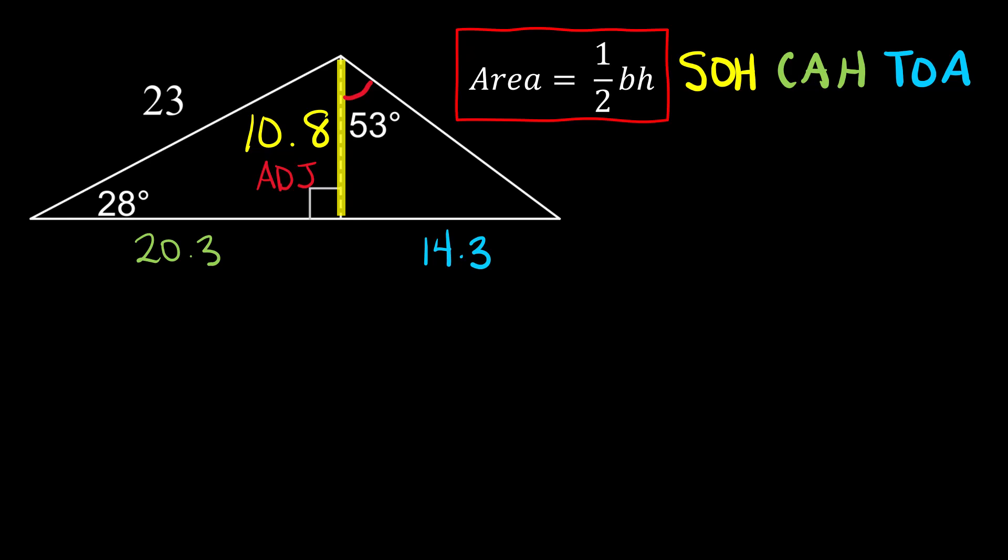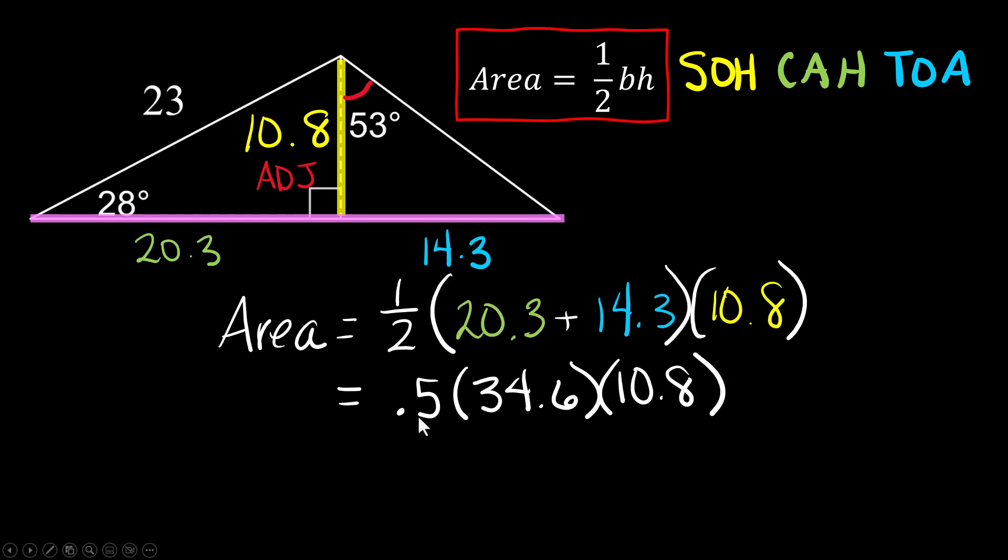Now we have all the pieces and parts. We just need to find the area now. We can figure out what the whole base is if we add these two together. We already knew the height. So that'll be the base. So let's write up what we know. The next line would be 0.5. I just changed one half to a decimal. The base, the entire length, is now 34.6, and the height is 10.8. Multiply these three numbers together and you have your answer. And I got 186.8. Yay!